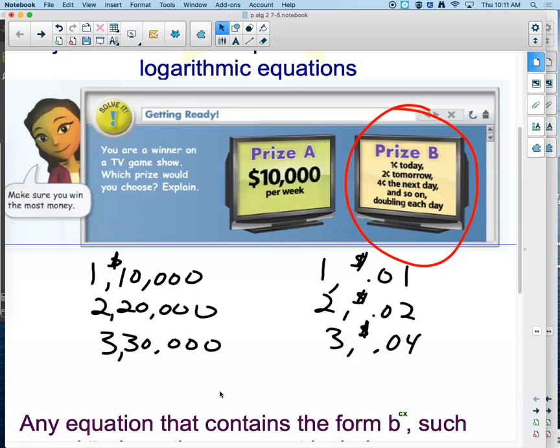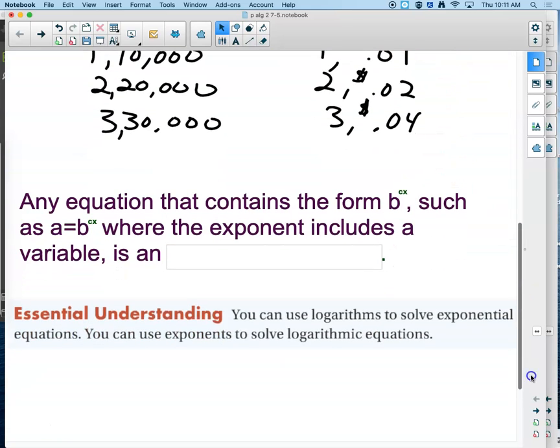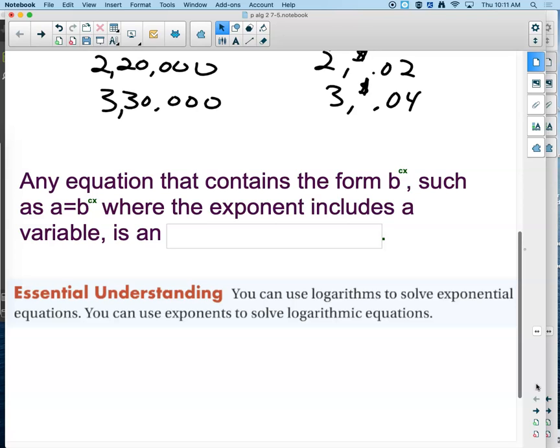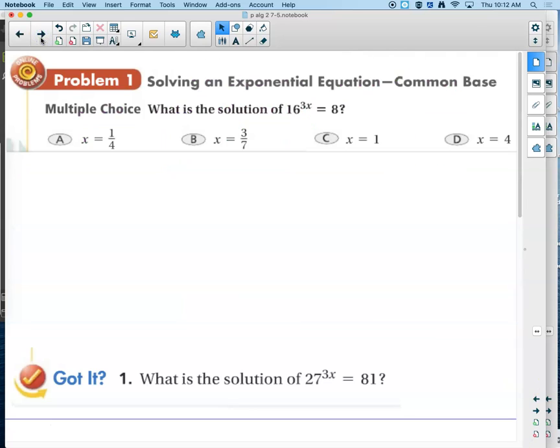So the question is, how does this link up to our change of base stuff? Well, we have to solve exponential equations. And that's what this one is about. So any equation that contains b to the something, in this case we've got b to the cx, such as a equals b to the cx, where the exponent includes a variable, is called an exponential equation. We just have to figure out how to solve them. John, put the phone away or I'll take it away. Our essential understanding, you can use logarithms to solve exponential equations. That's what they are for. You can use exponents to solve logarithmic equations. Well, how? I mean, that's what I would want to know. How is this working? Let's get to it.